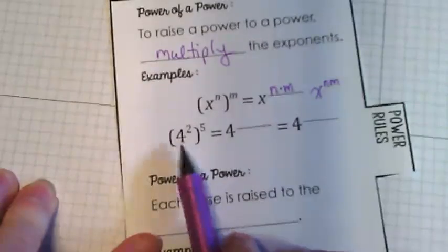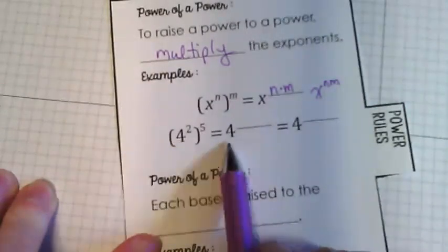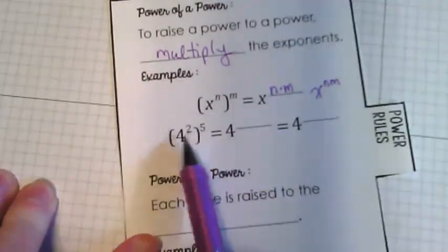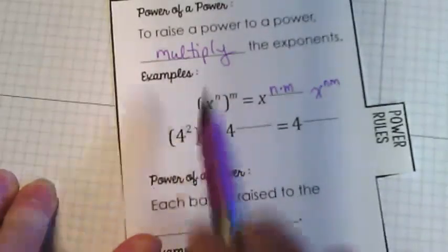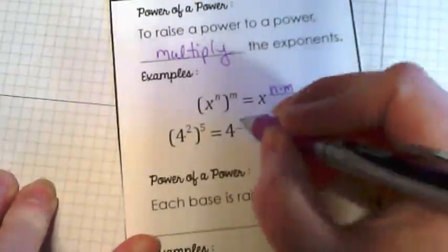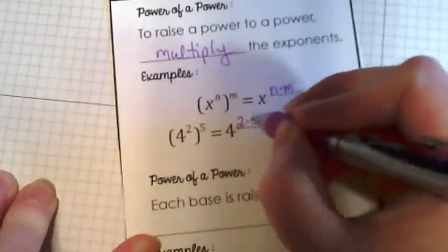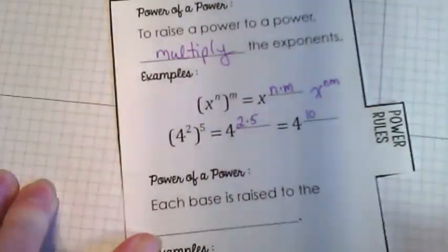So if we have an example with numbers, we would do 4, that's our base. Notice the 4 is placed there, so we're only dealing with the exponents and we multiply them. So we're going to show here 2 times 5, meaning the answer is 4 to the 10th power.